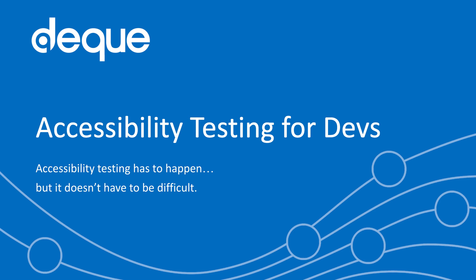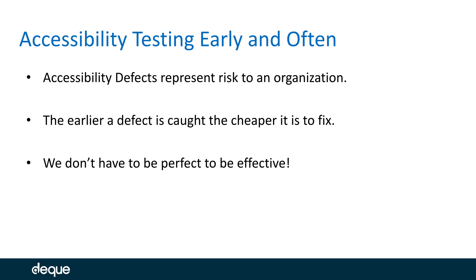We need to do accessibility testing — it has to happen, but it doesn't have to be difficult. Accessibility testing is important; we want to test early and often. Accessibility defects represent risk to an organization. The earlier a defect is caught, the cheaper it is to fix. We do not want defects working their way too far down a process, as it involves more individuals and takes developers farther from the line of code they need to fix.